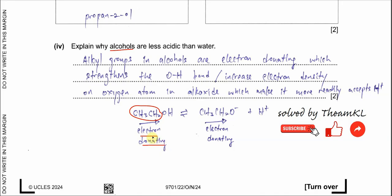The alkyl group has an electron-donating nature — also called a positive inductive effect, though 'electron-donating effect' is clearer. Because the alkyl group donates electrons, it increases the electron density on the oxygen of the O-H bond, which strengthens that O-H bond. A stronger bond is harder to break and less likely to undergo dissociation.